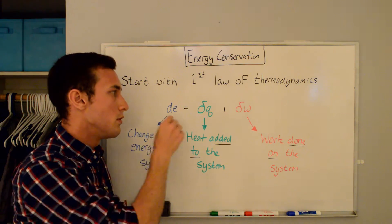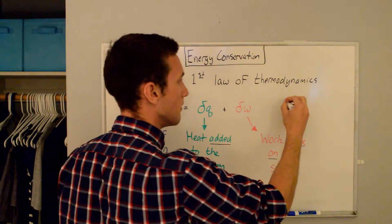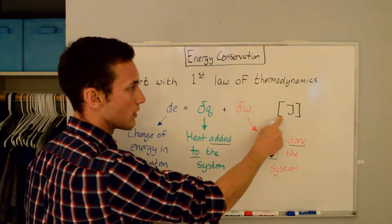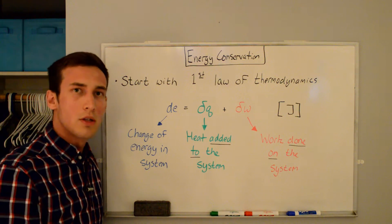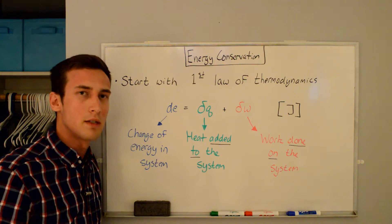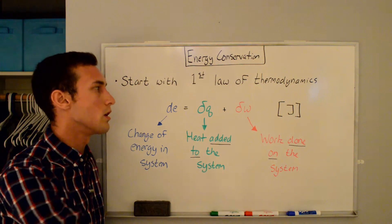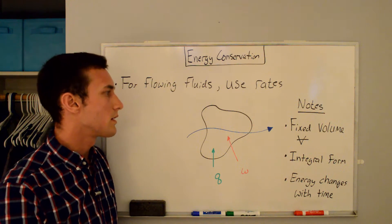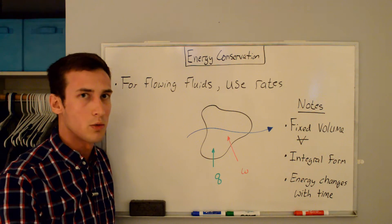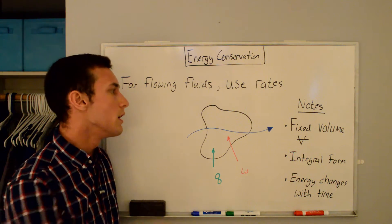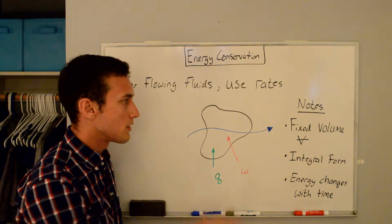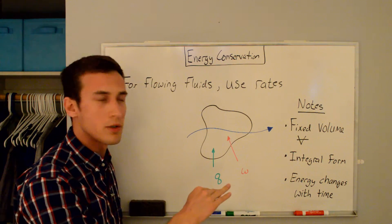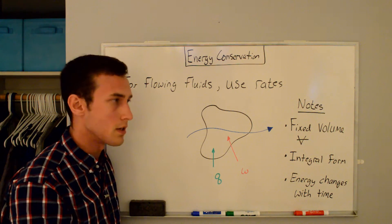It's also important to note that the units for this equation are in units of energy, or joules [J]. I'll be writing units in square brackets and I'll be using units a lot throughout this derivation so that we can keep track of them. Now for flowing fluids, it makes sense to use rates for this derivation, which is how something changes with time. I've drawn this arbitrary black blob here — this is a fixed volume V, and I'm going to use V with a bar through it to signify volume so we don't confuse it with velocity V.